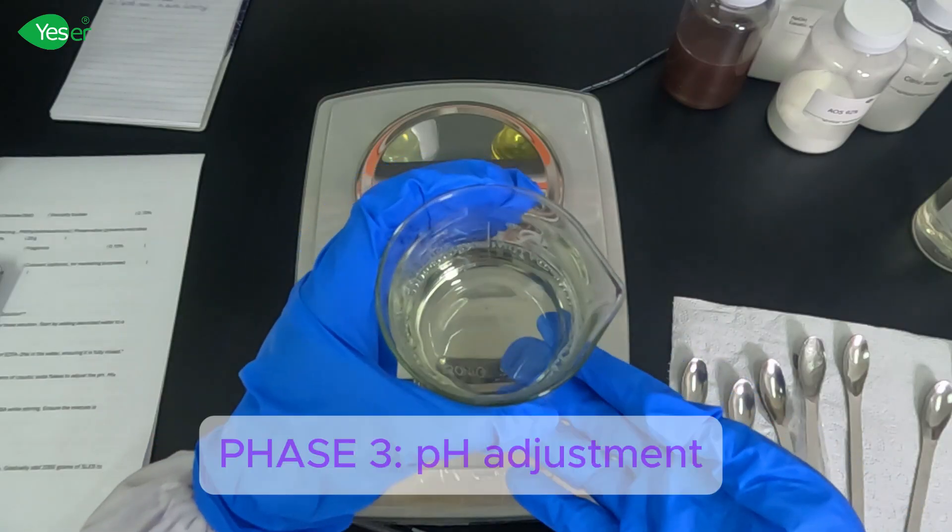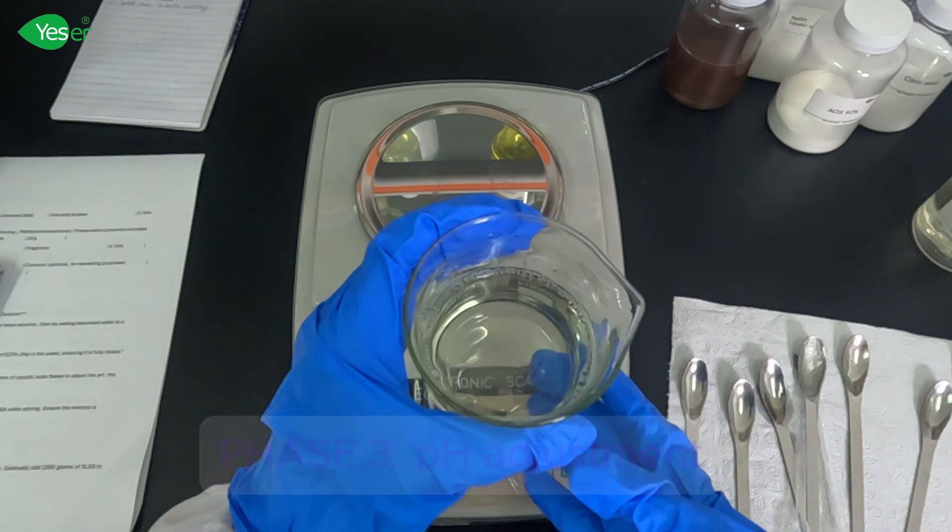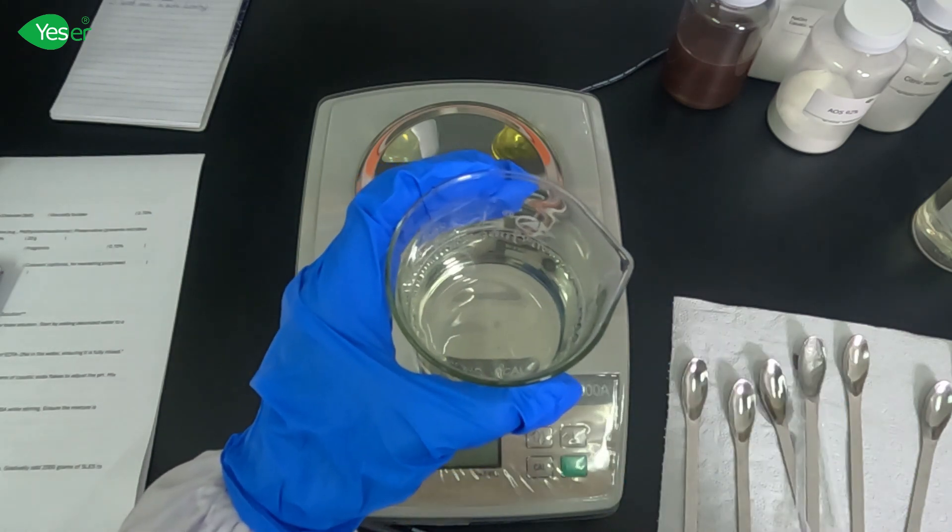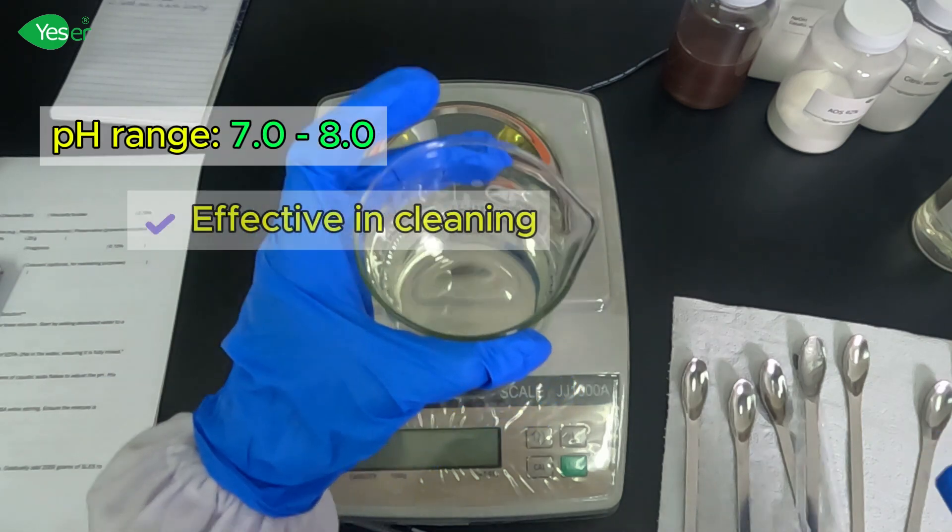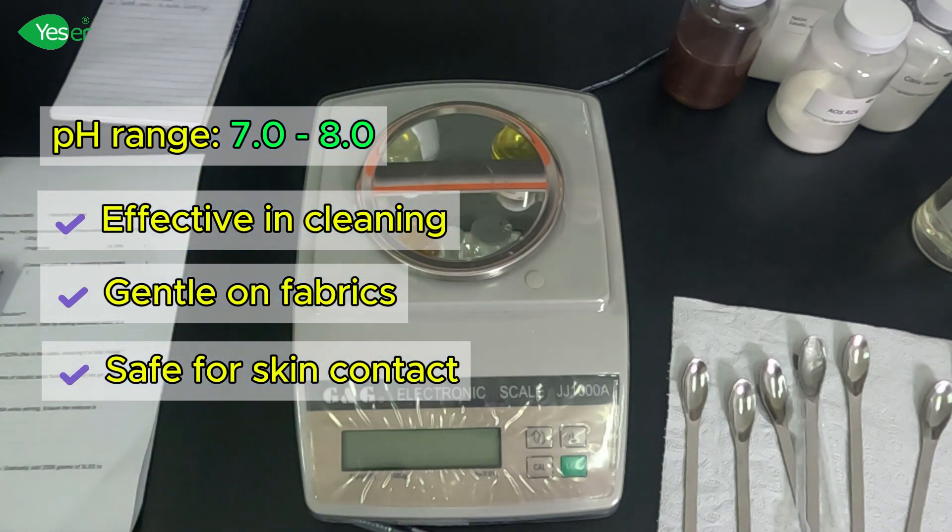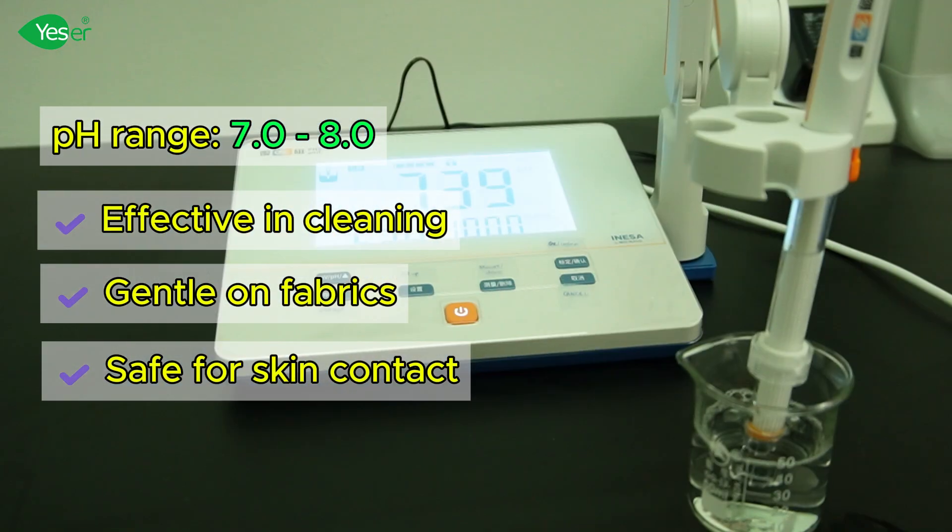Now that we've incorporated the surfactants with the aqueous base, let us check the pH. pH range should be between 7 and 8 to ensure the detergent is effective at cleaning, gentle on fabrics and safe for skin contact. If the pH is off, adjust it with small amounts of citric acid until it's in the desired range.